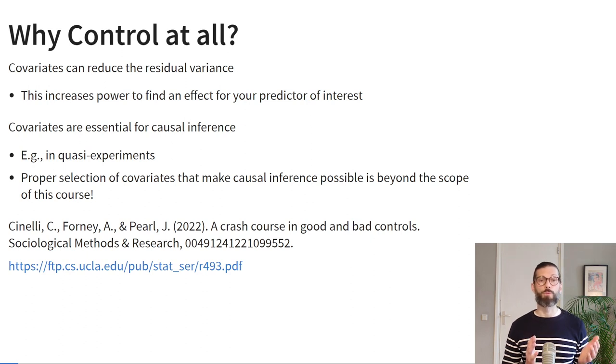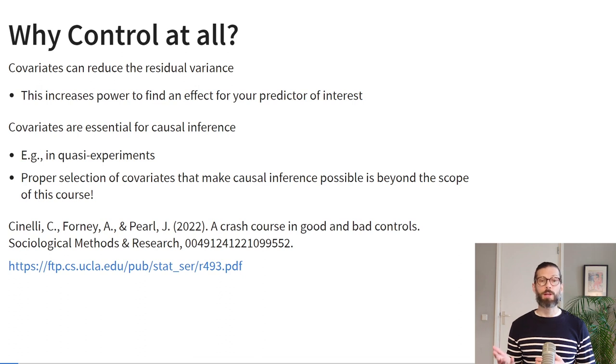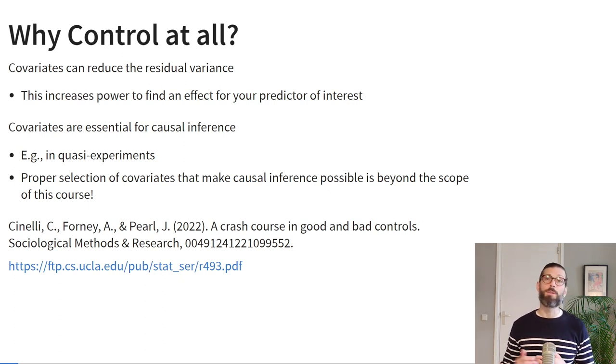But if control variables are so finicky, why should we control for them at all? Well, controlling for covariates can reduce the residual variance in your outcome, which increases your power to find an effect for the predictor of interest. Covariates are also essential if you want to perform causal inference — for example when you use naturally observed data resulting from a quasi-experiment, where people were not randomly assigned to groups but self-selected into groups. It is possible to select covariates that allow you to draw causal conclusions, but only through very careful selection.